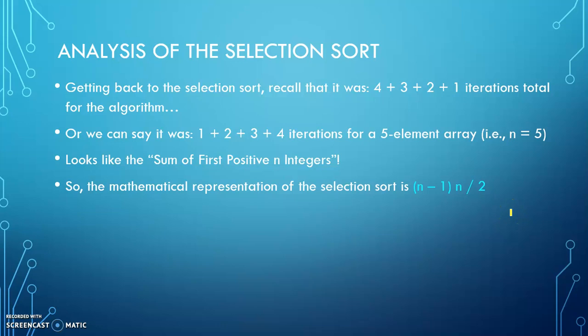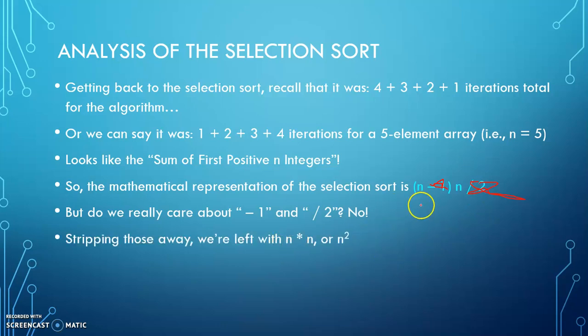And I've already mentioned in previous videos that we don't care about things like this and this. When you're talking about big O, everything is stripped down and simplified. So what we're left with is really n times n, n times n, or n squared, which you might recall from our last video is big O of n squared quadratic time, just like the bubble sort. So the selection sort is in big O of n squared, just like the bubble sort.